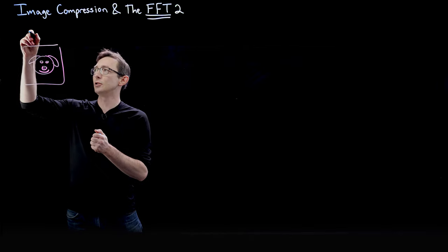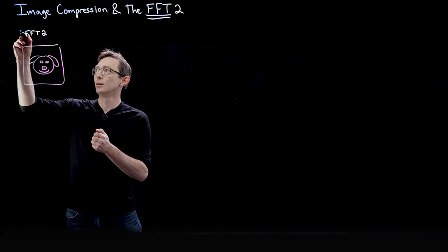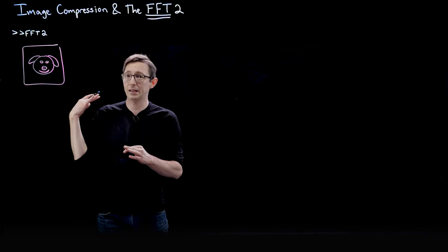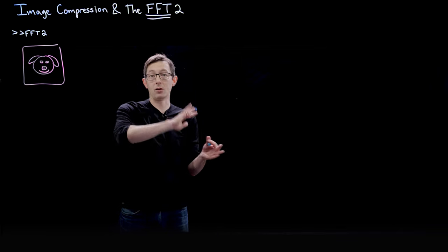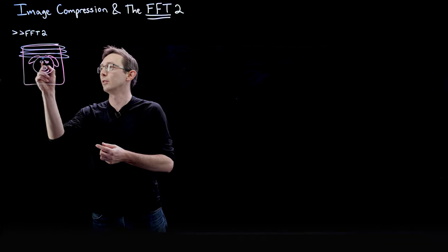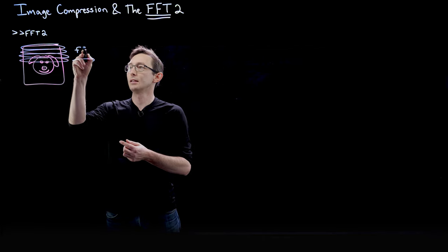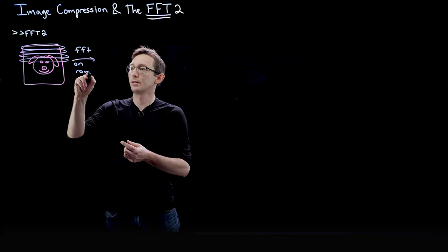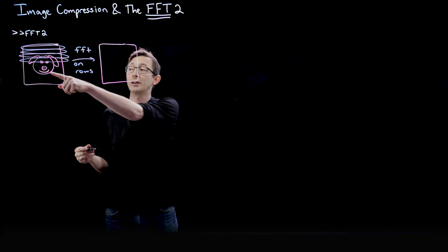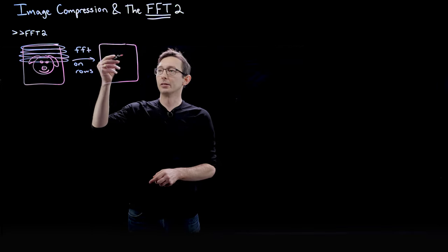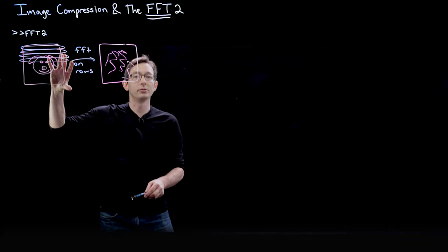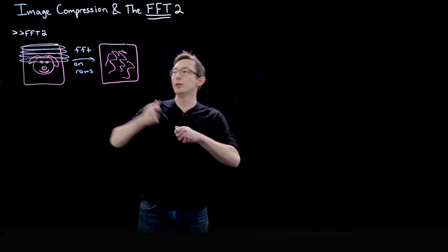The first thing is the FFT2 command. Essentially what you do in an FFT2 — this is super simple — you just FFT every row and then you FFT every column, or vice versa. It doesn't really matter. So the first step is we're going to FFT every single row, and we're going to get some new image. I can't draw this image because it's in some weird Fourier transform space — it's going to look messy. And then once I've Fourier transformed all the rows, I'm going to Fourier transform all of the columns of that new image.